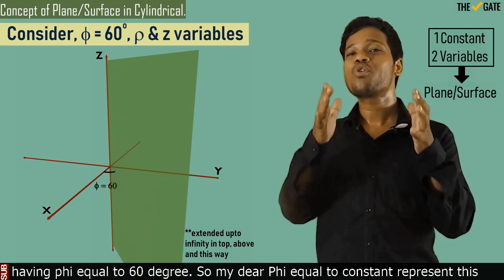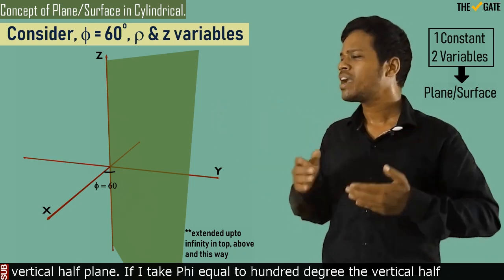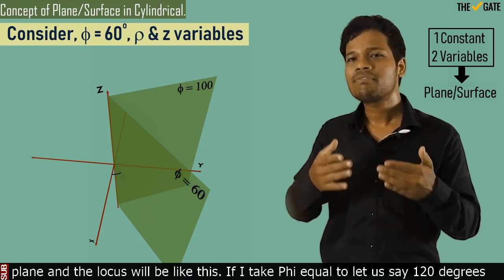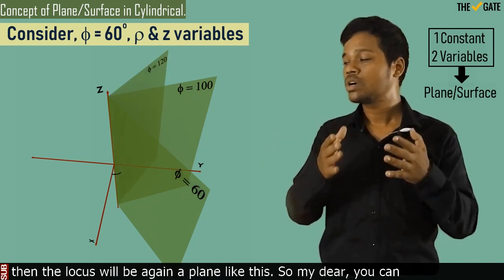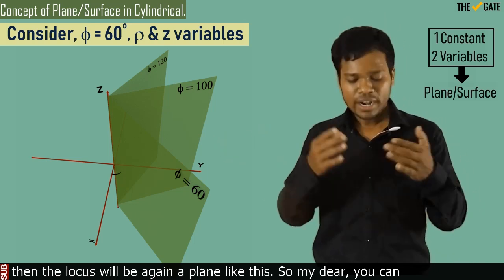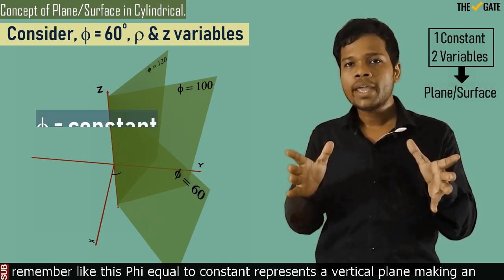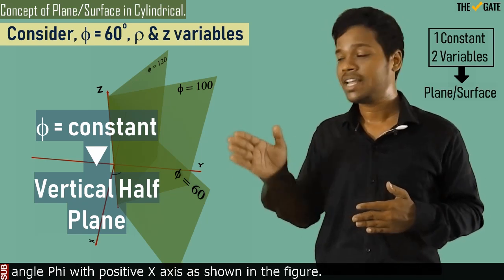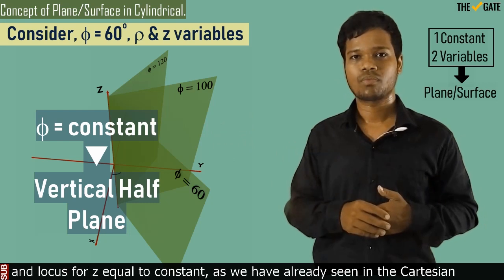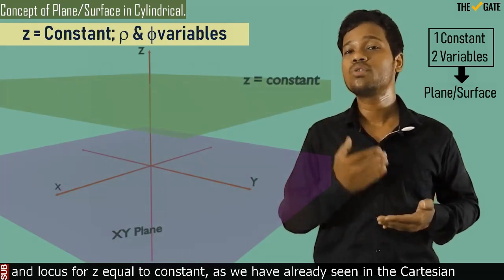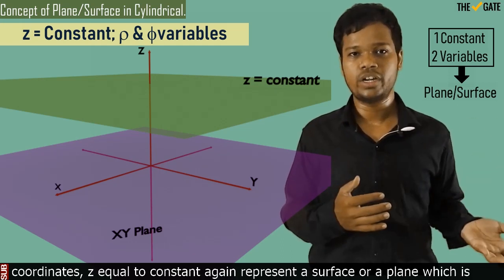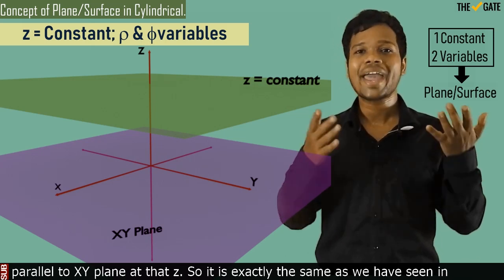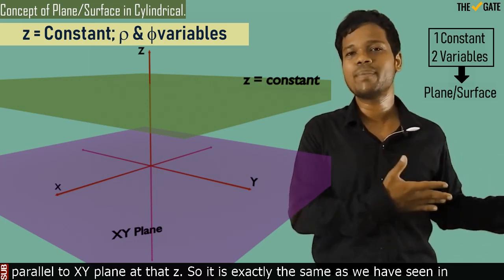So phi equal to constant represents a vertical half plane. If phi equal to 100 degrees or 120 degrees, the locus will again be a vertical half plane at that angle. Phi equal to constant represents a vertical half plane making an angle phi with the positive x-axis. For z equal to constant, as we have already seen in Cartesian coordinates, it represents a surface or plane parallel to the xy-plane at that z value.